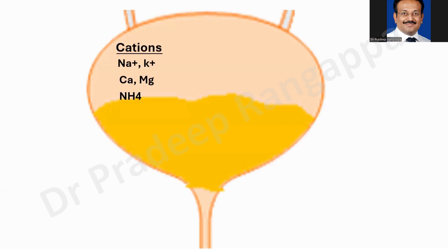Since the name is urine anion gap, we need to look at components in the urine. There are cations in the urine — the commonly measured ones are sodium and potassium, and there are unmeasured cations. For all trainees, remember one important unmeasured cation that compensates for acidosis: ammonium. Ammonium becomes an integral component in the urine anion gap. Calcium and magnesium are also unmeasured cations in the urine.